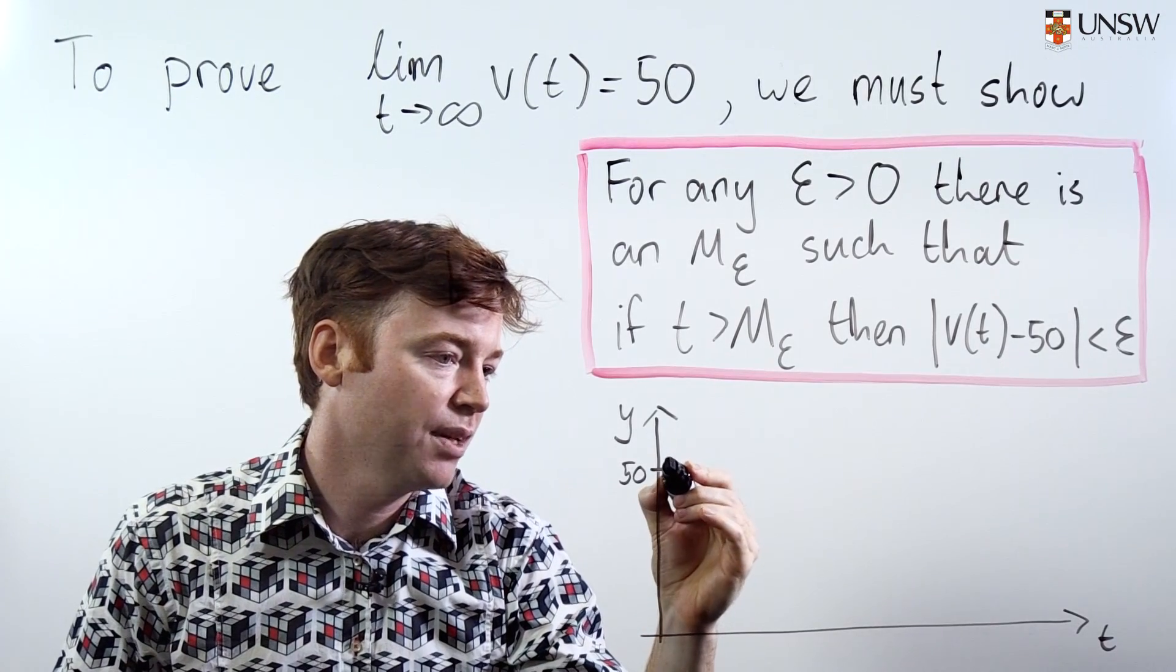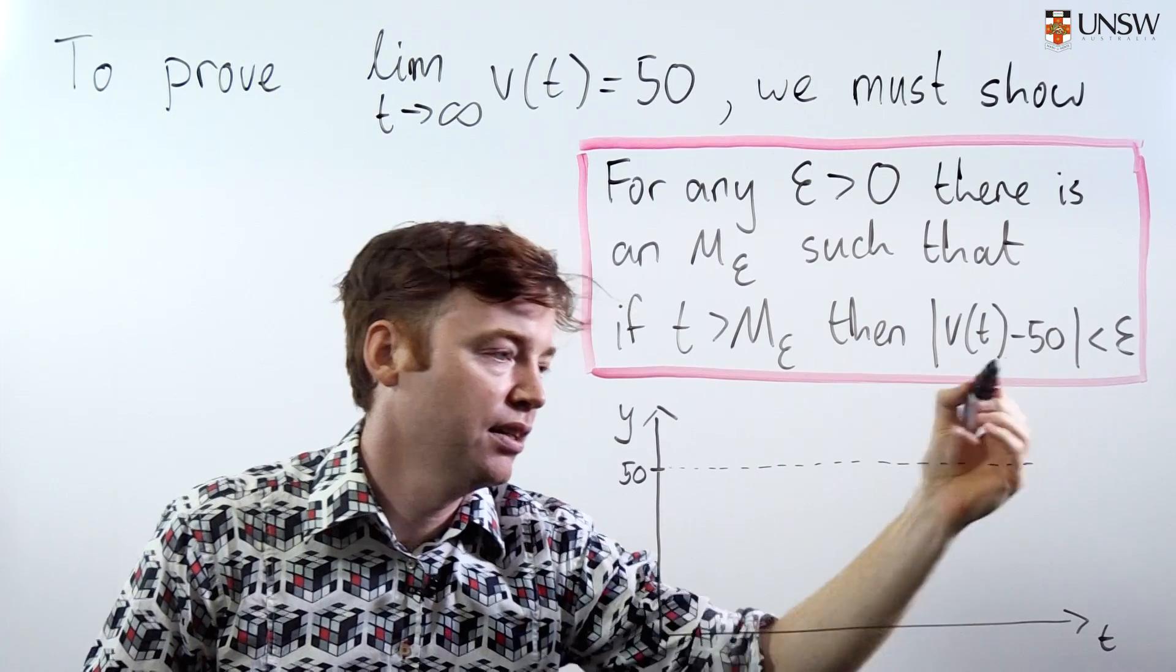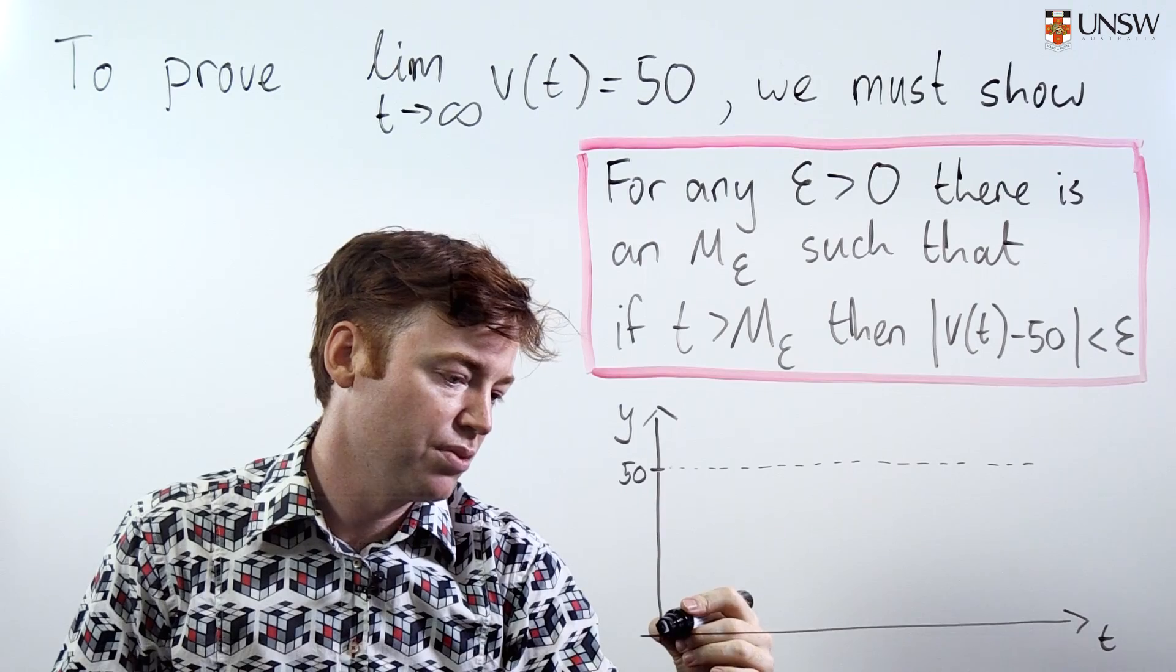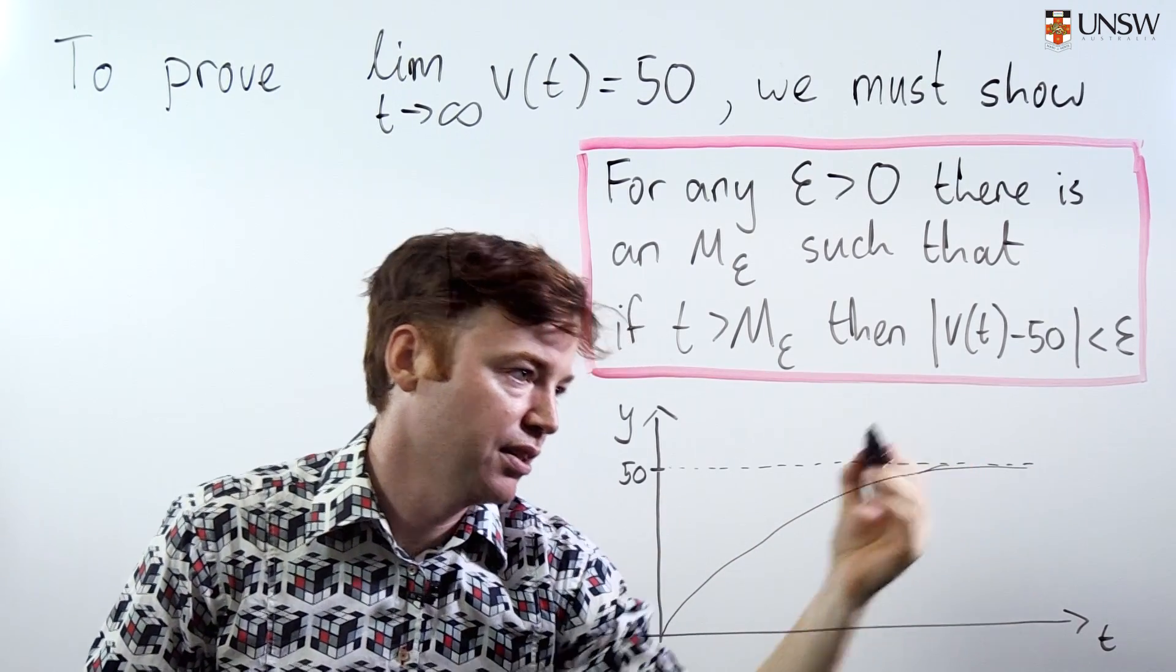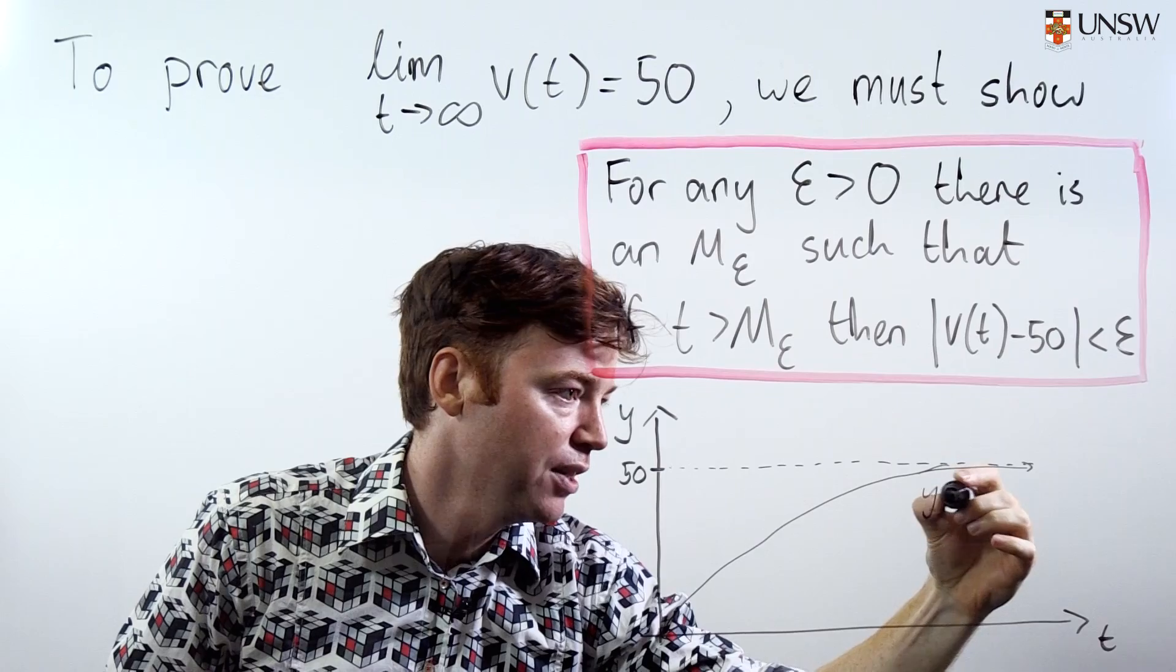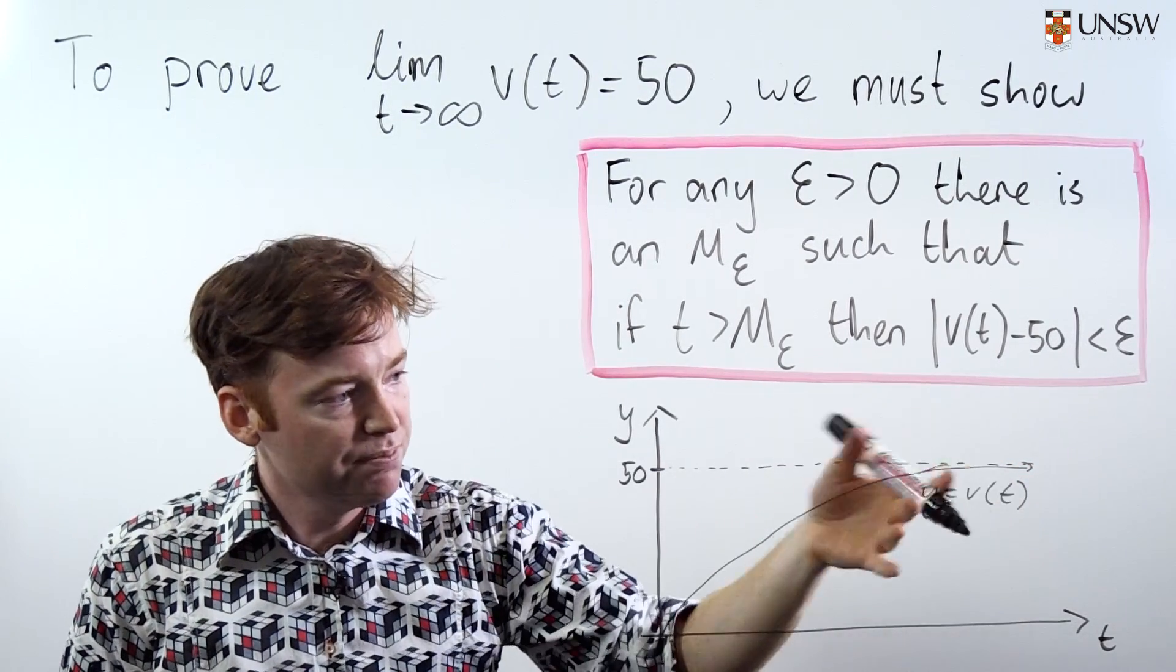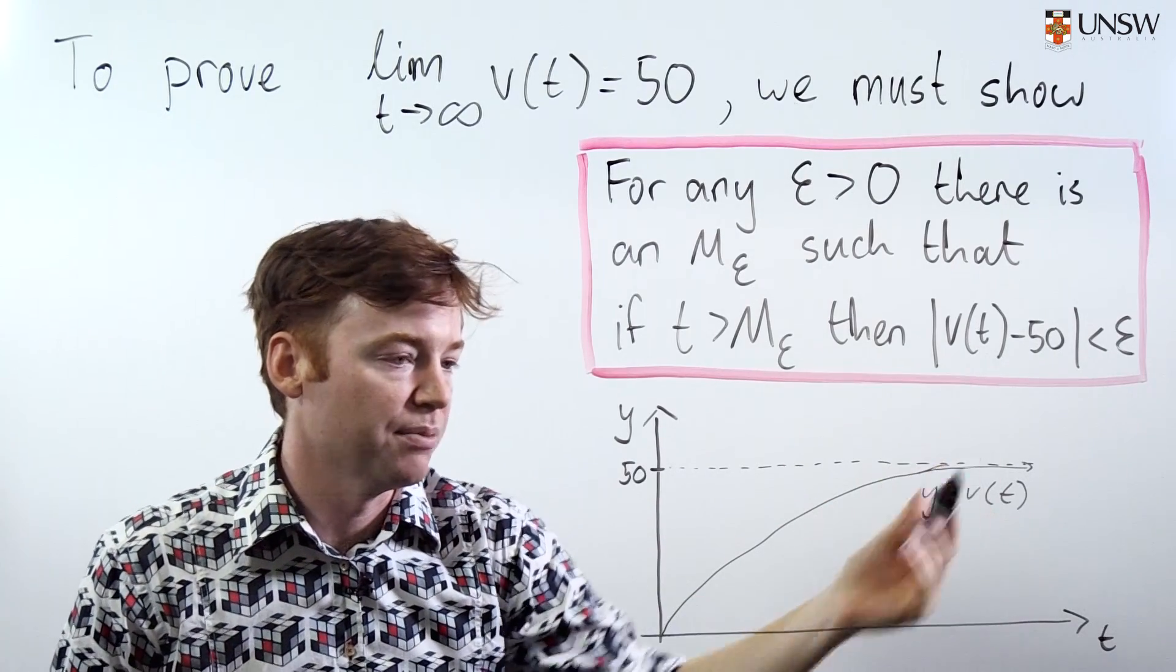Well, it looks something like this. I'm going to draw the horizontal asymptote of 50, like that. And my function v of t goes something like this, getting closer and closer to this asymptote, never actually reaching it. So this is the function of y equals v of t.